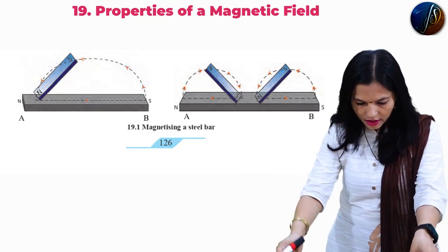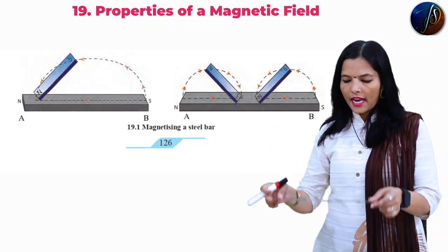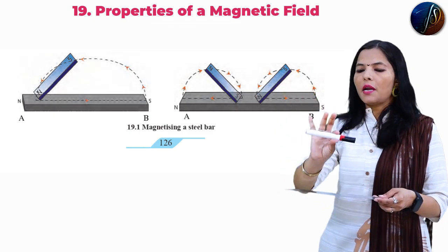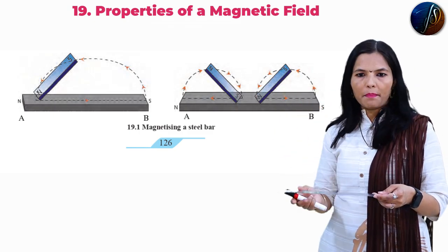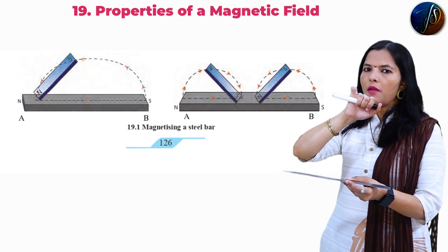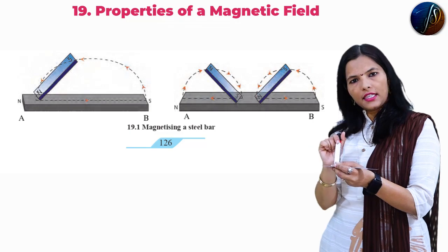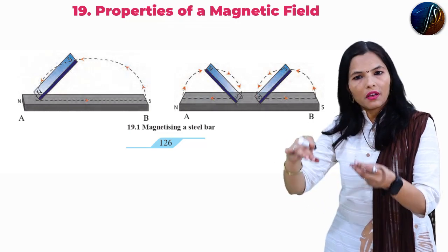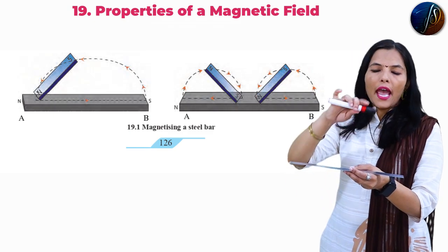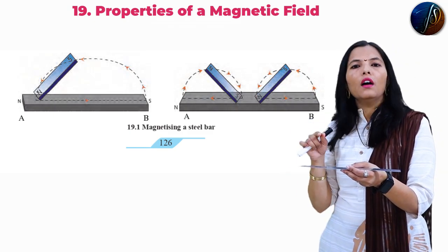We have to put the steel scale on the table. Then we have to take one bar magnet and take its end pole. This is the north pole and this is its south pole. We have to drag the end pole — this is the A side and this is the B side of the steel bar.